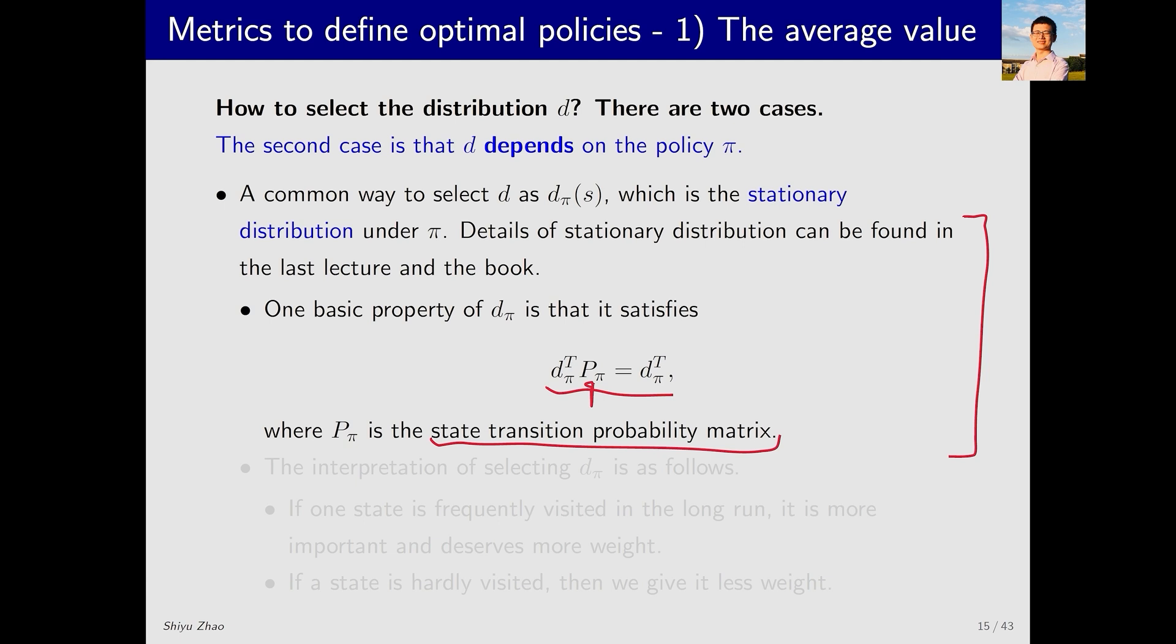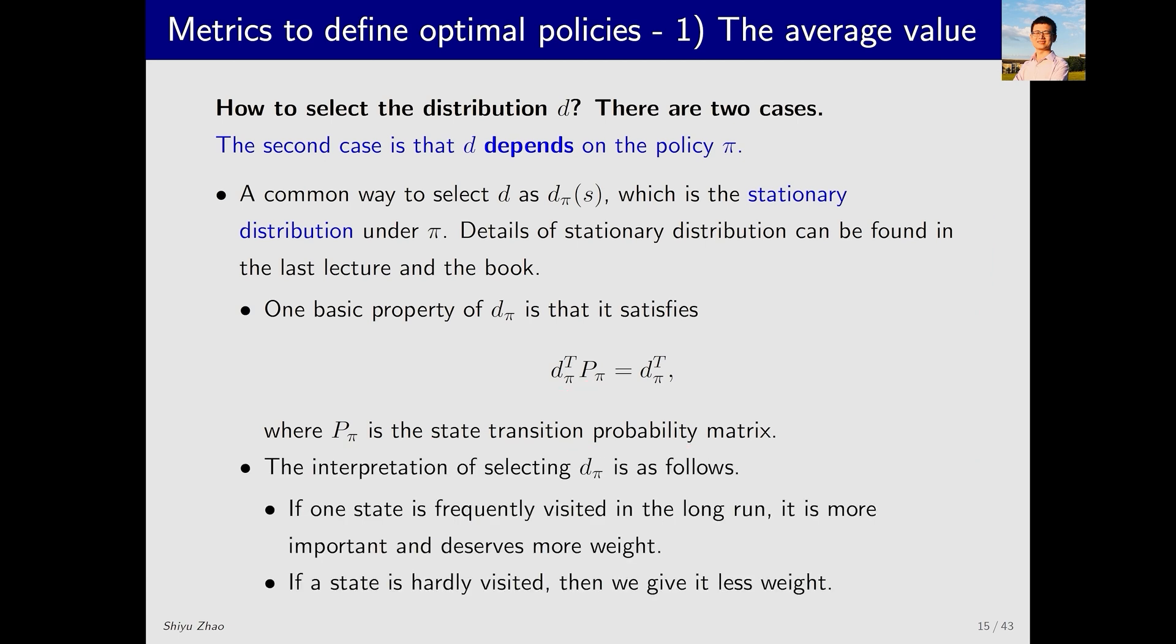In short, dπ is a distribution that depends on π. When I execute a policy, certain states will be visited more frequently, and certain states will be visited less frequently. The more frequently a state is visited, the higher its probability, and consequently its weight will be higher. States that are visited less frequently will naturally have lower weights.